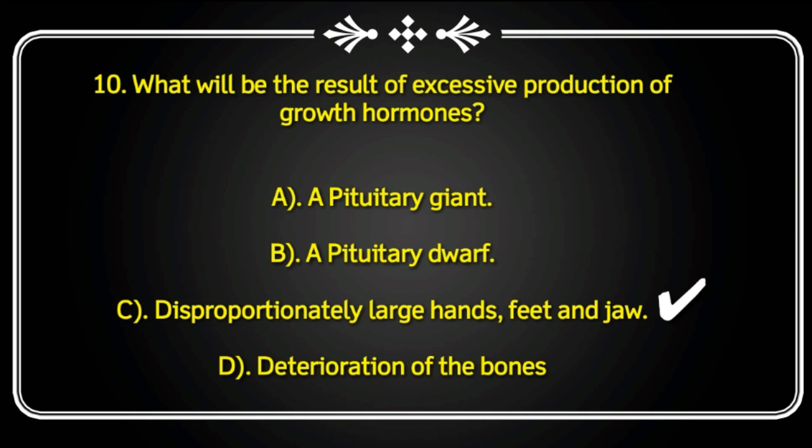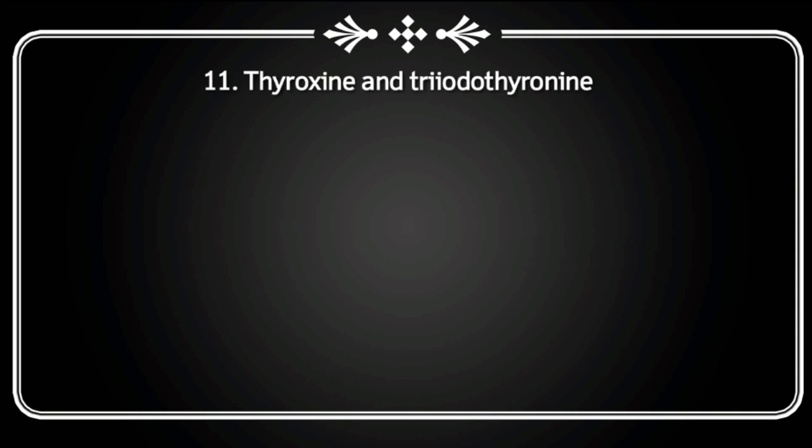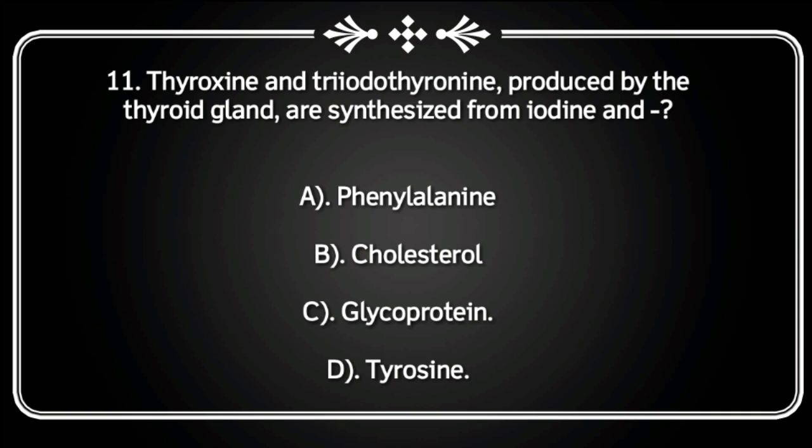Next question: Thyroxine and triiodothyronine produced by the thyroid gland are synthesized from iodine and what? Phenylalanine, cholesterol, glycoprotein, or tyrosine? Correct answer is tyrosine.